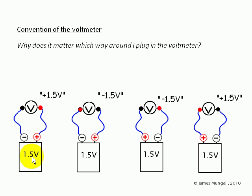In the first picture, the negative side of the battery has been linked to the negative terminal of the voltmeter, and the positive to the positive. It's been wired up the right way round, giving a reading of plus 1.5 volts.